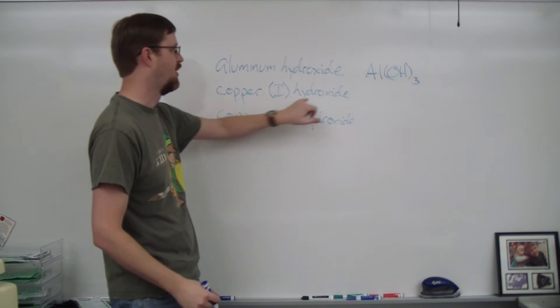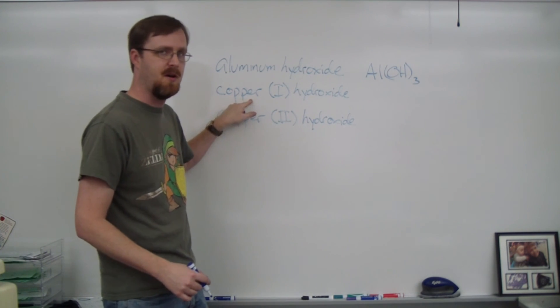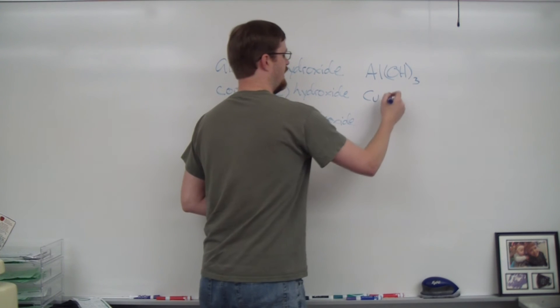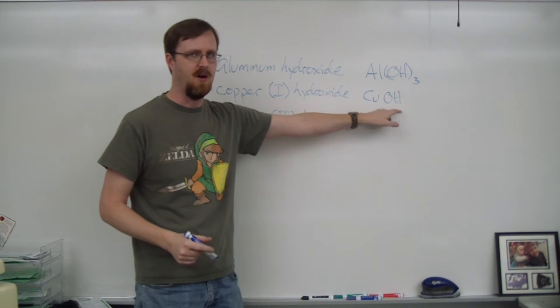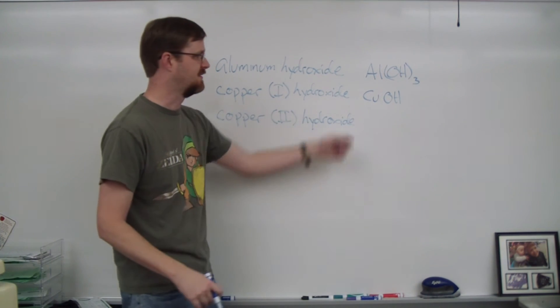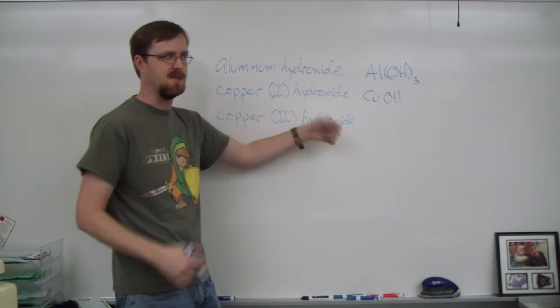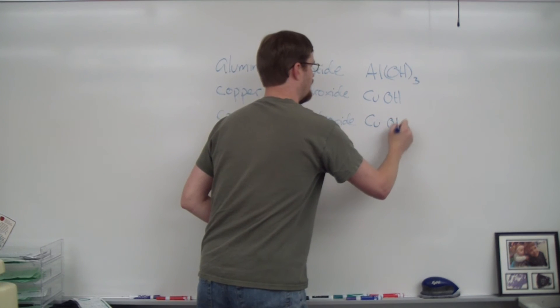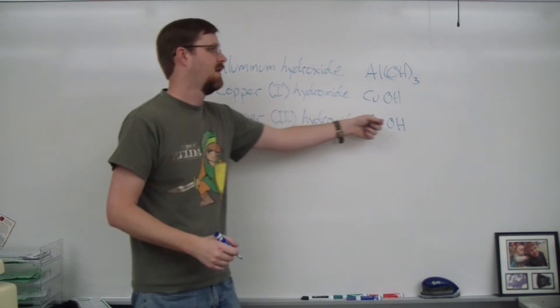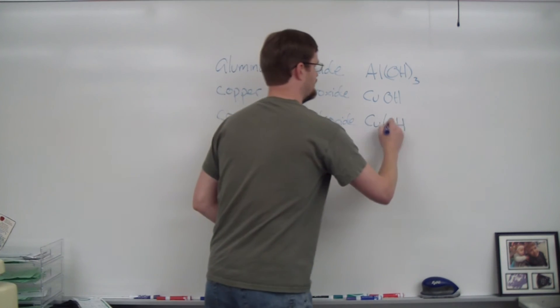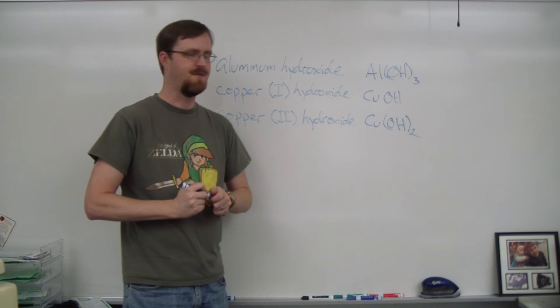Let's try the next one. Copper one hydroxide. So this one is telling me that copper has a charge of plus one. Well, the symbol for copper is Cu. Hydroxide is OH. This is plus one. That's negative one. They add up to zero. No subscripts are needed. So CuOH. Last example, copper two hydroxide. So again, we're going to take Cu and OH, but this time copper has a charge of plus two. Hydroxide is still negative one. So parentheses two, and that's how it works. It's very simple.